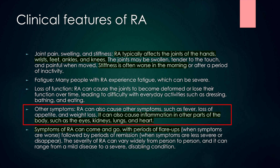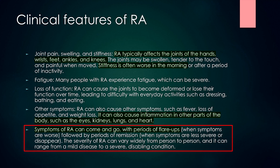RA can also cause other symptoms like fever, loss of appetite and weight loss. It can cause inflammation in other parts of the body such as eyes, kidneys, lungs and heart. In the eyes, keratoconjunctivitis sicca is the commonest manifestation. In the kidneys, it may cause amyloid kidney disease. Symptoms of RA can come and go with periods of flare-ups followed by periods of remission.